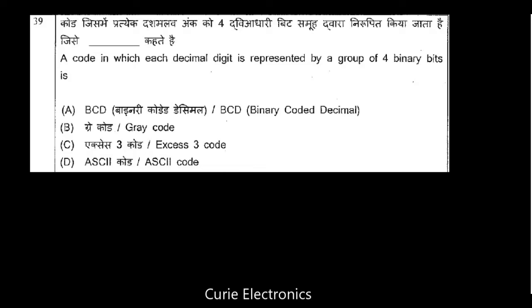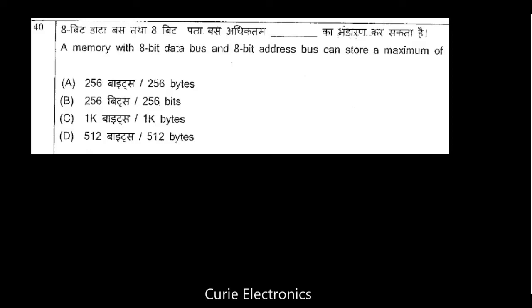Question 39: A code in which each decimal digit is represented by a group of four binary bits is called BCD — Binary Coded Decimal. For example, 5 is represented as 0101, and 9 is represented as 1001. This is BCD.